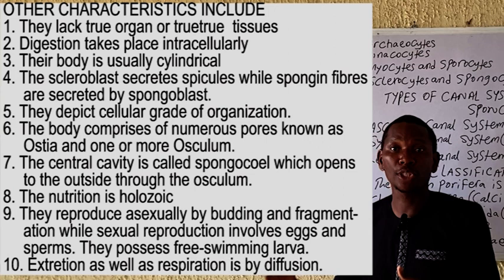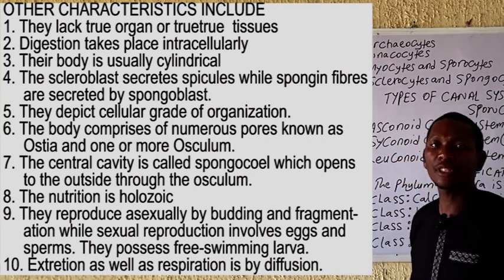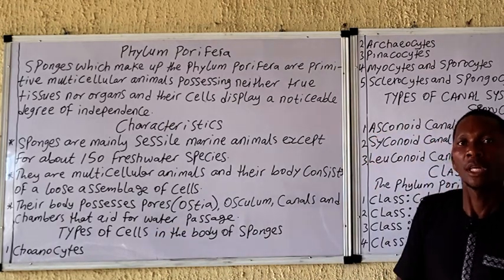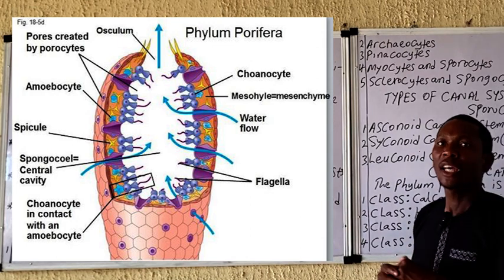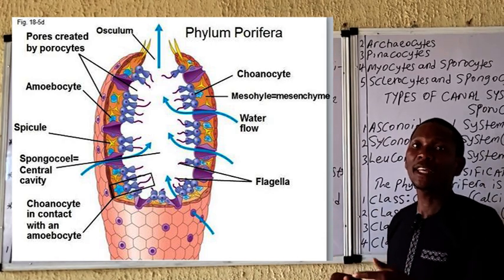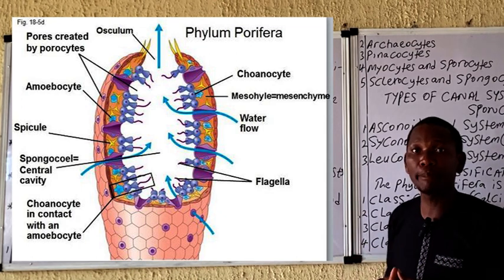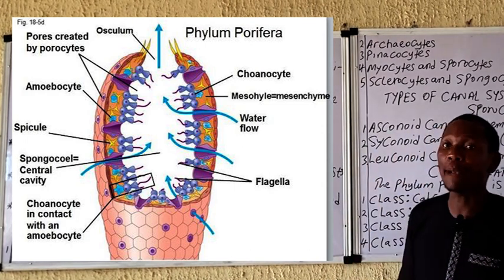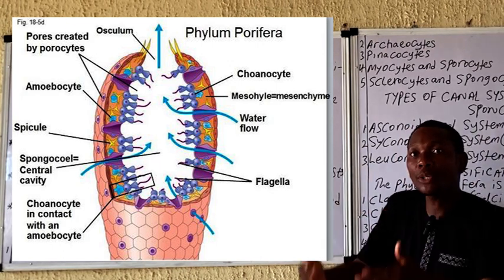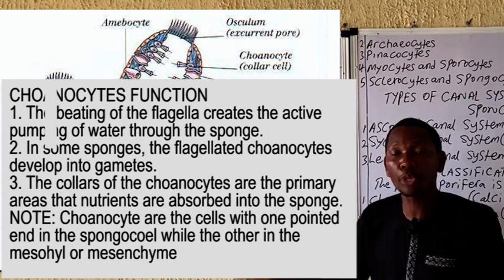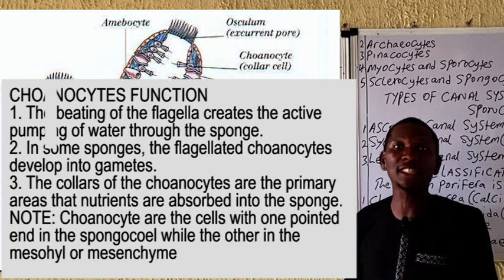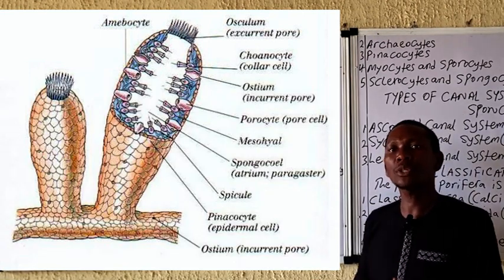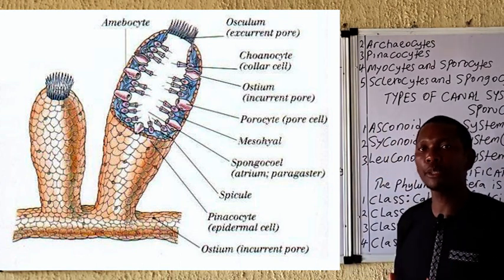There are numerous types of cells in the body of the sponges. The first cell we will mention is the coanocyte. The coanocyte, as seen in the diagram on the board, is flagellated. One end opens into the sponge cavity while the other end is embedded in the mesohyl. The coanocyte carries several functions, such as production of gametes. The flagellated coanocyte is responsible for creating the current of water moving through the body of the sponges. The collar cells of the coanocyte are where nutrients are absorbed.